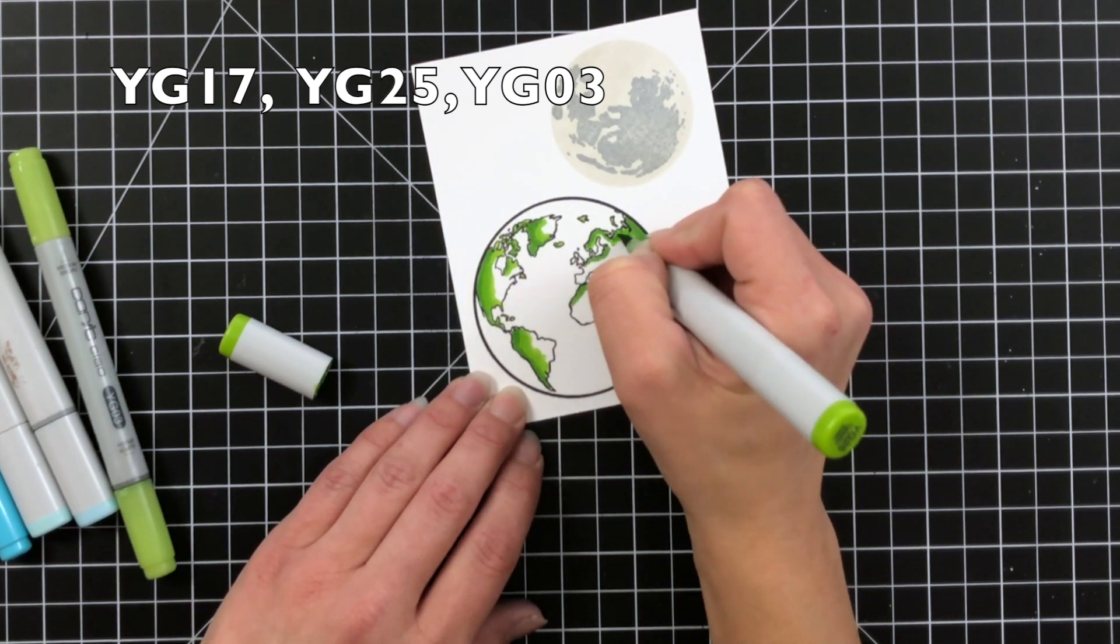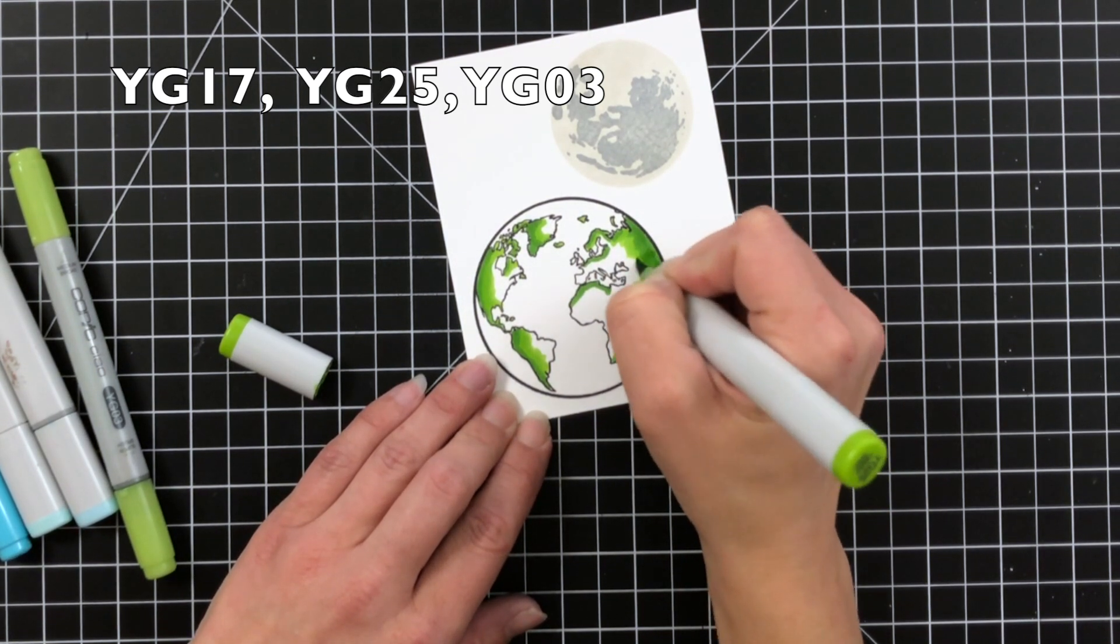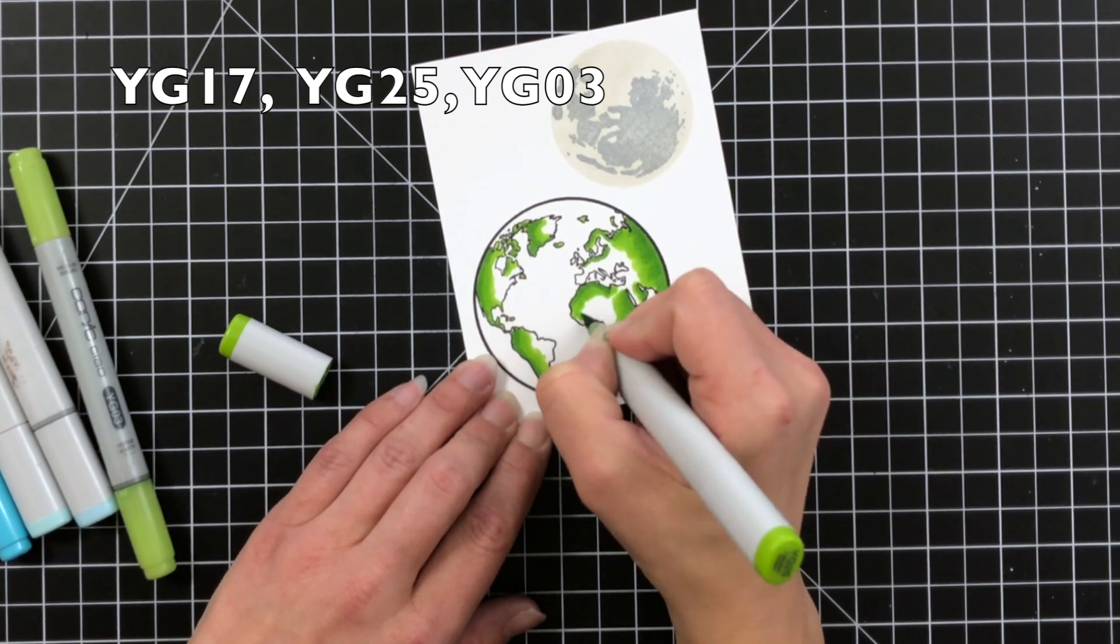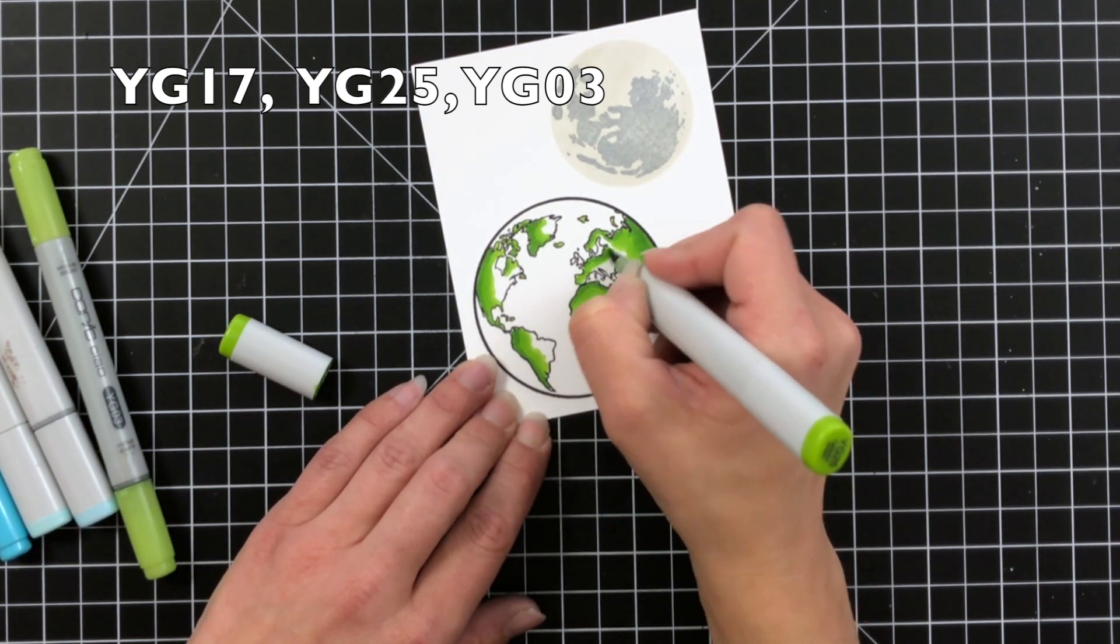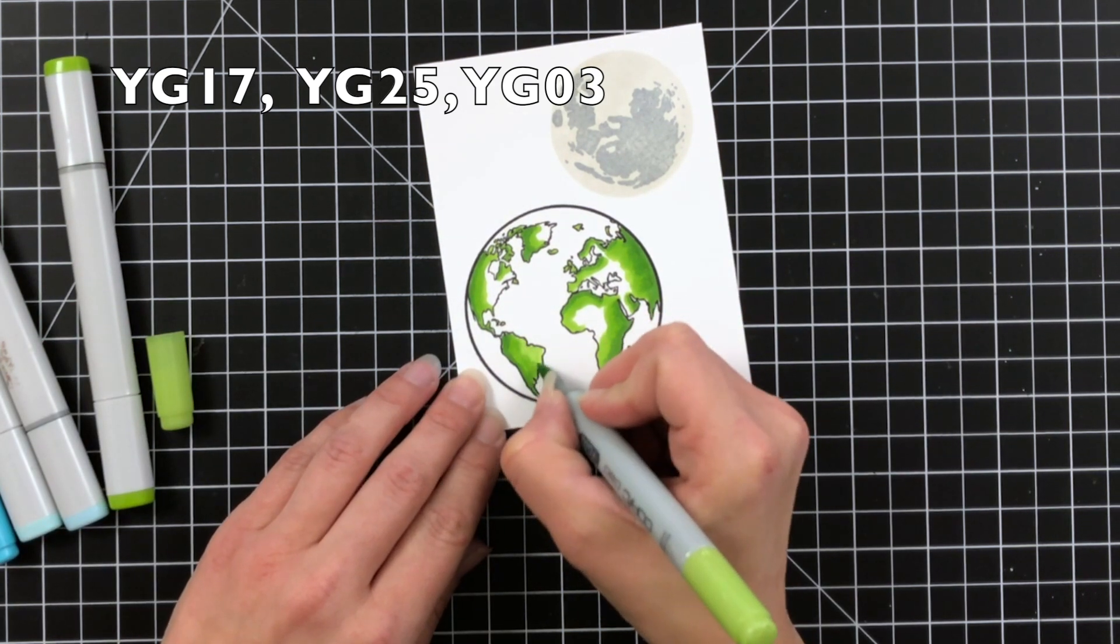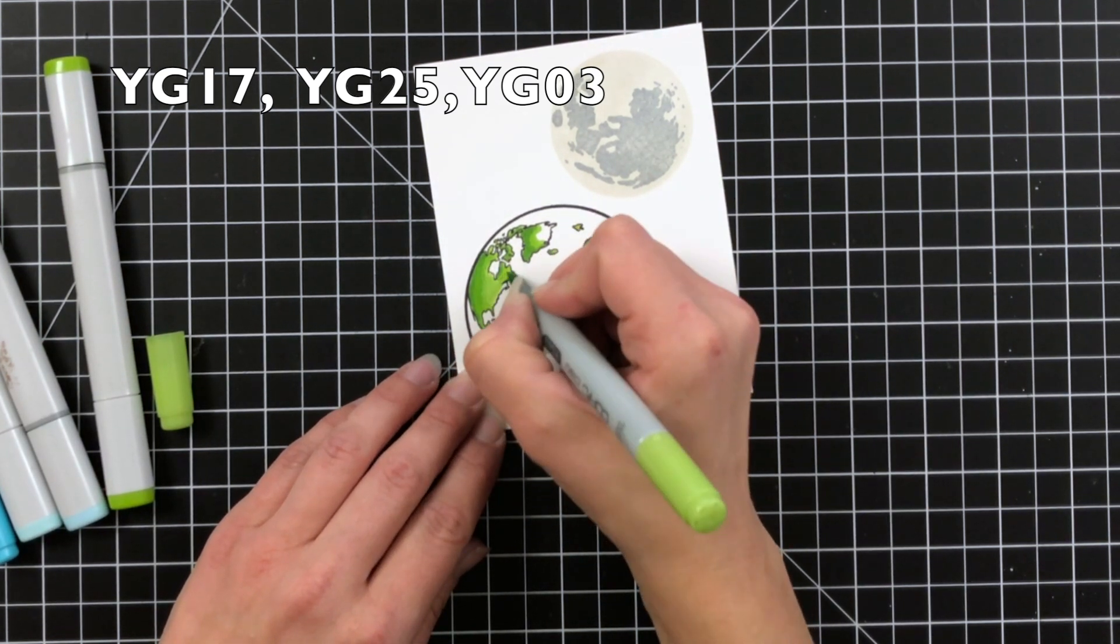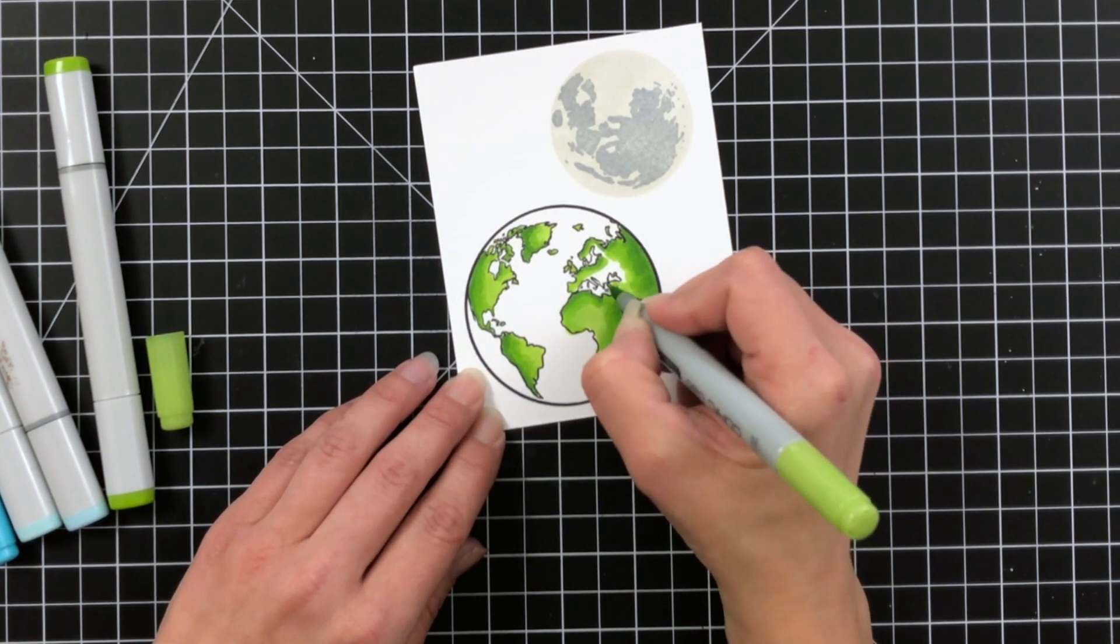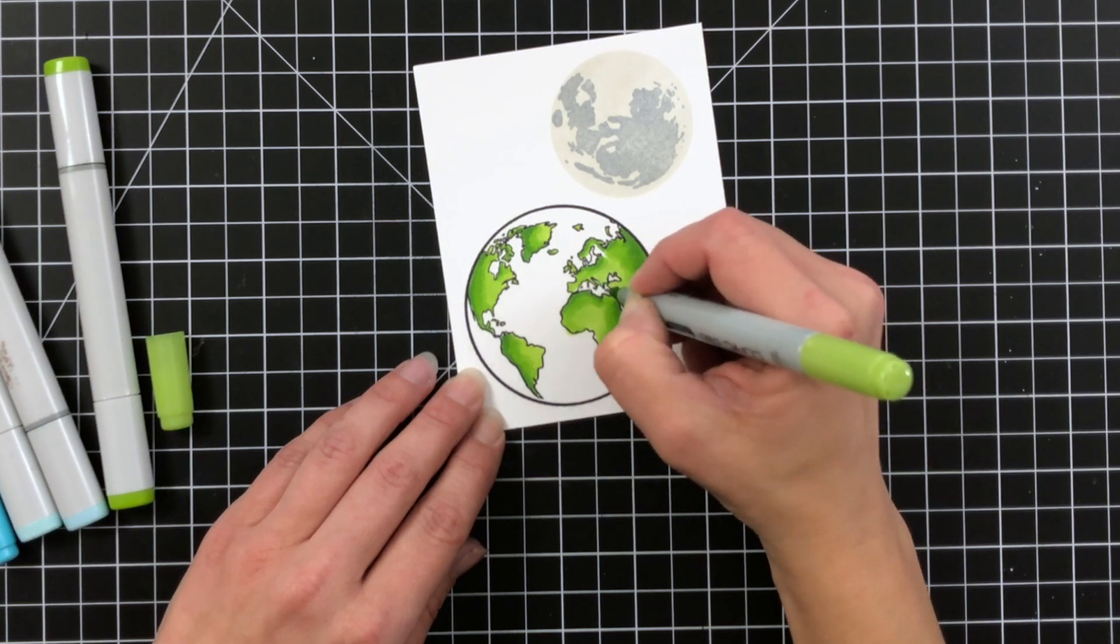You can see I really didn't pay much attention where a shadow would be. I just wanted to have some color laid down. I made sure to kind of keep the highlight towards the middle of the earth. Then blend out with that YG03, a nice bright green. Just really shows off that highlighted area.